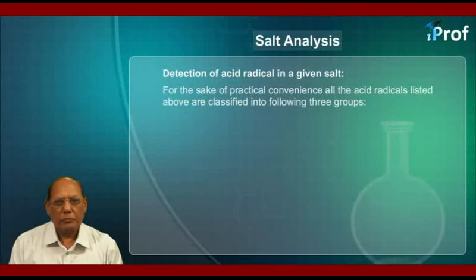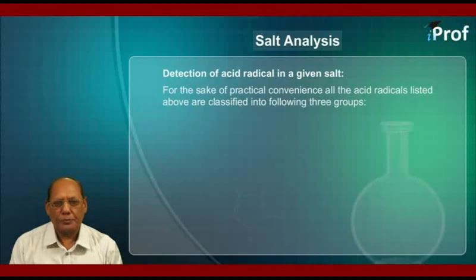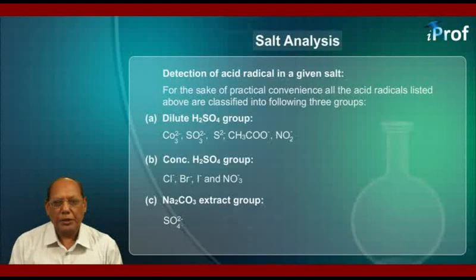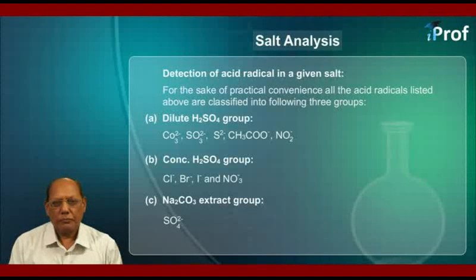We will first learn detection of acid radicals in a given salt. For practical convenience, all the acid radicals listed above are classified into three groups. Group A: Dilute sulfuric acid group — includes carbonate, sulfide, acetate, and nitrite. Group B: Concentrated sulfuric acid group — includes chloride, bromide, iodide, and nitrate ions. Group C: Sodium carbonate extract group — has only one radical, that is sulfate.